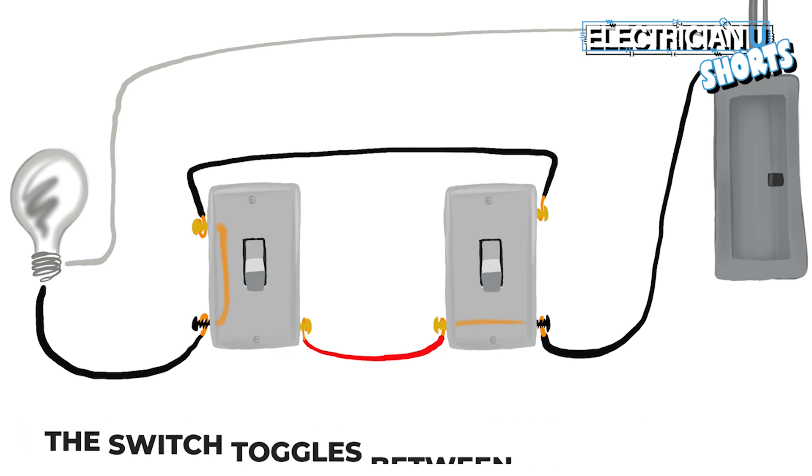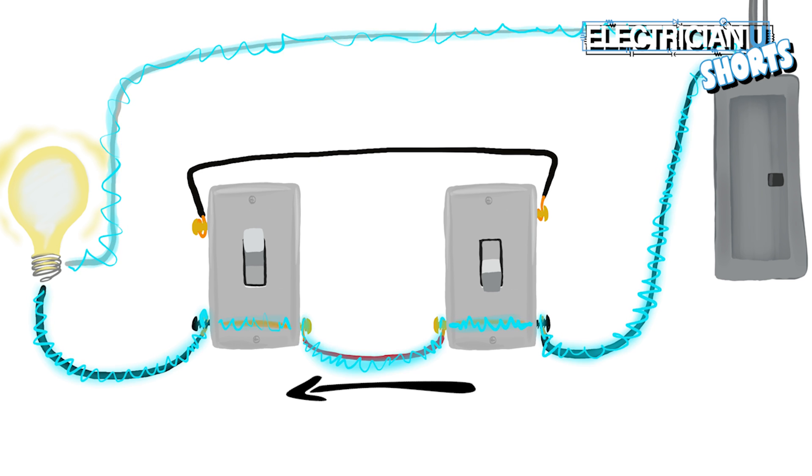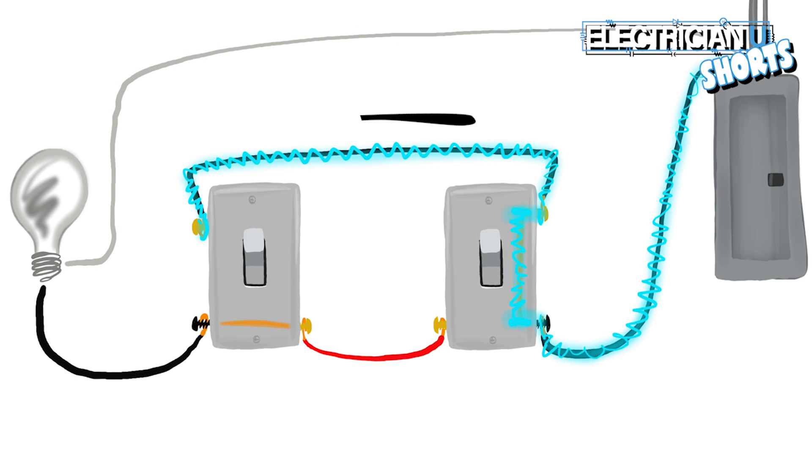So you're either going to be taking a straight path this way to get to the light or if you change the position of the switch it's going to take current through and go this way and nothing's connected.